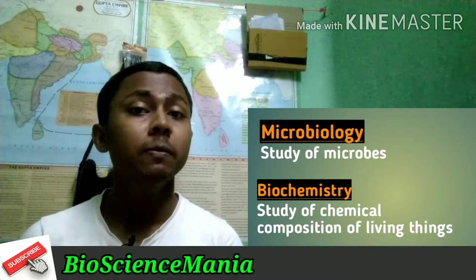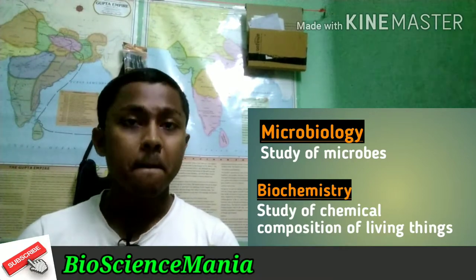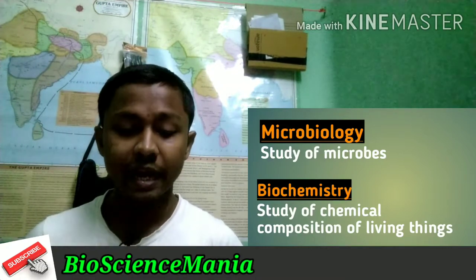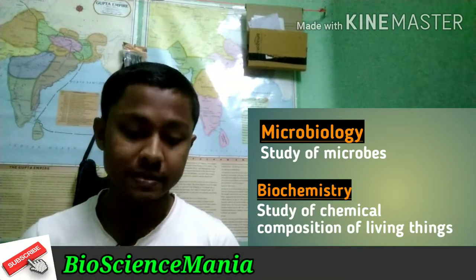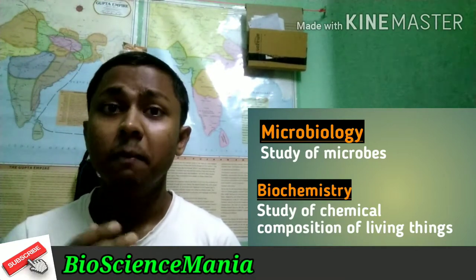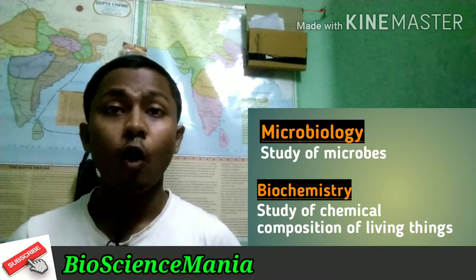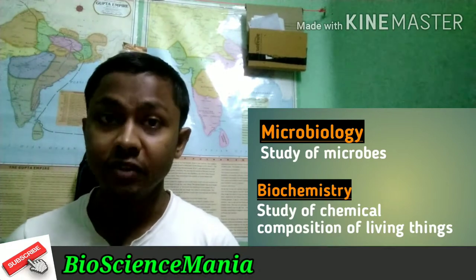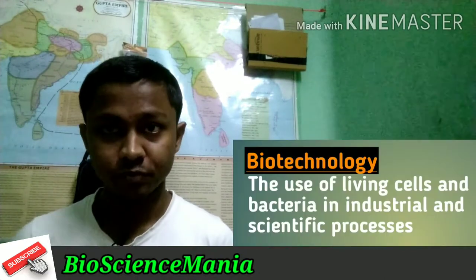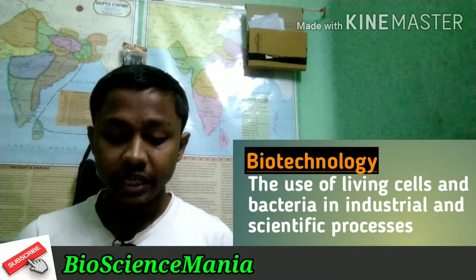All of these — zoology, botany, cytology, genetics, microbiology — are actually branches of biology. Biology itself is a branch of science. Next, biochemistry is the study of the chemical composition in a living thing. Biotechnology is the study of living cells and bacteria in industrial uses through scientific processes.